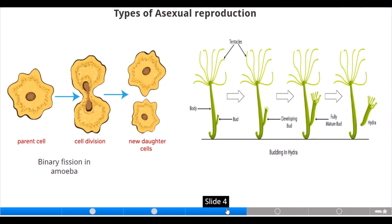This slide shows us types of asexual reproduction. The first picture shows cell division by binary fission in Amoeba — we have the parent cell, division takes place, and new daughter cells are formed. The second picture shows budding in Hydra: we have the body, then a bud develops until it is fully mature and breaks off the parent Hydra.